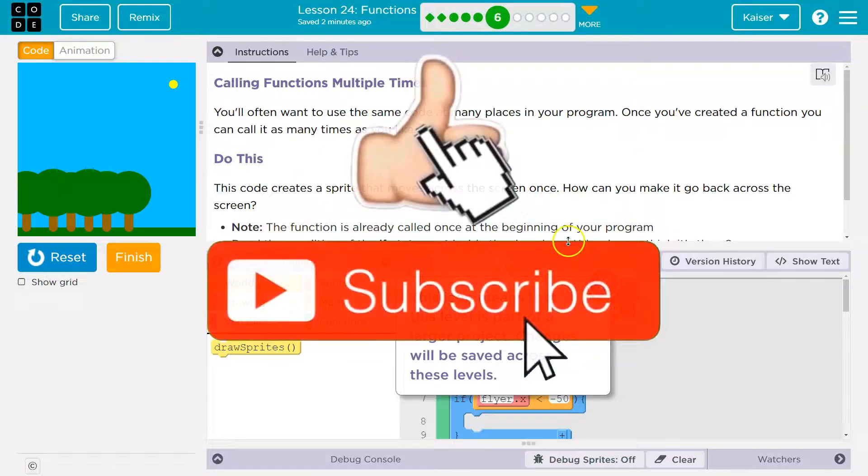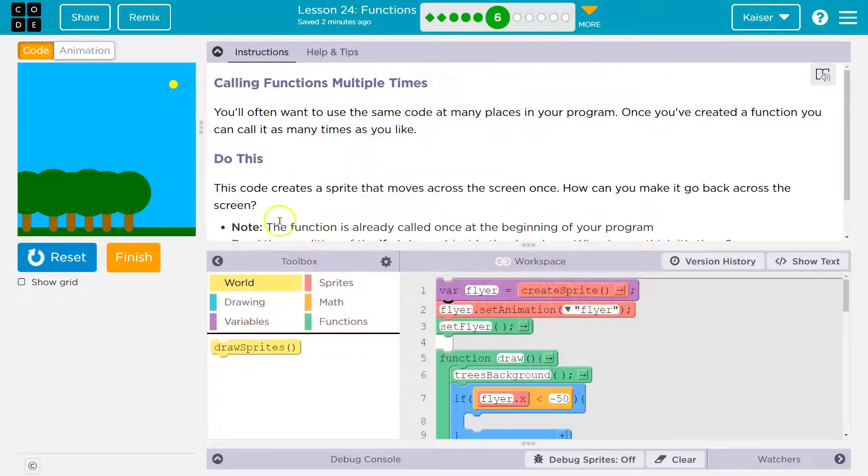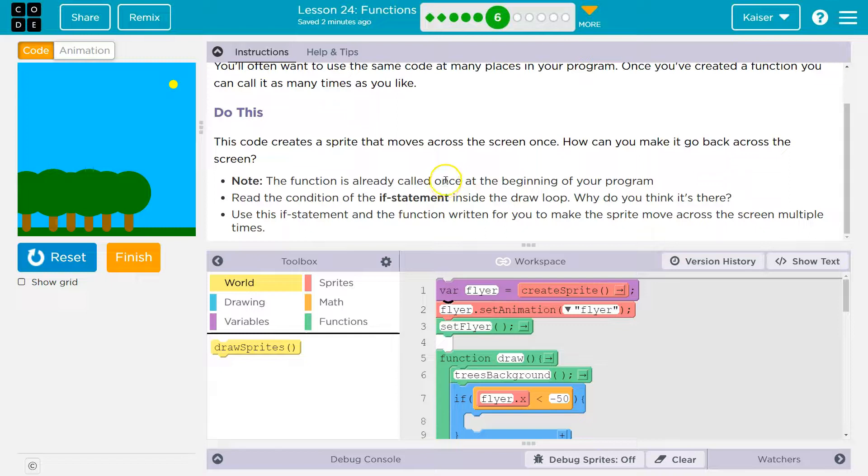And so what they're saying there is calling a function is just asking that code to run. So let's see. Do this. This code creates a sprite that moves across the screen. How can you make it go back across the screen? Note, the function is already called once at the beginning of your program.